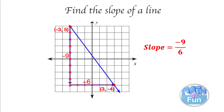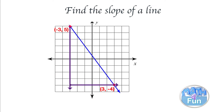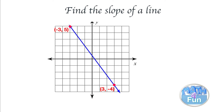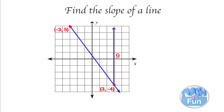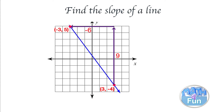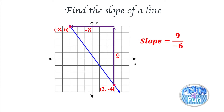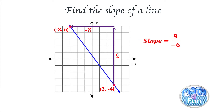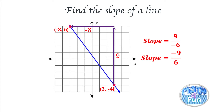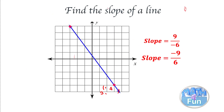Now if we go from the lower to the upper point, we count upward nine units, which is positive nine, and to the left six units, which is negative six. So it's positive nine divided by negative six, which is nine over negative six, which equals negative nine over six — the same result as before.